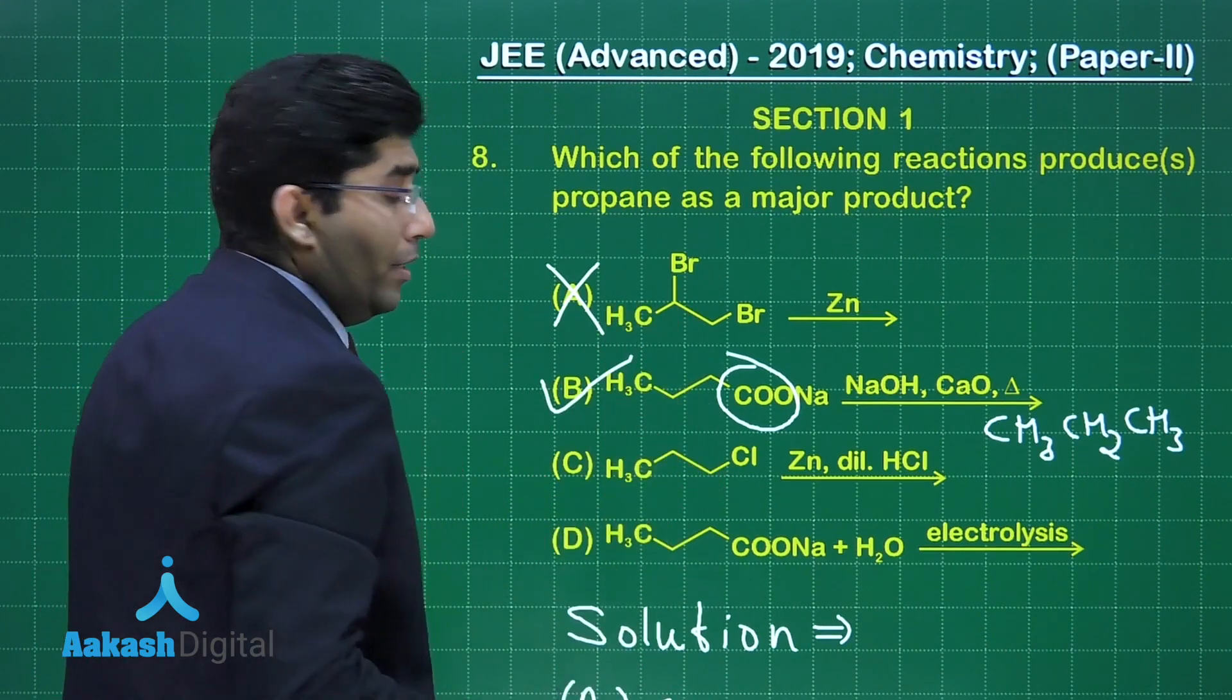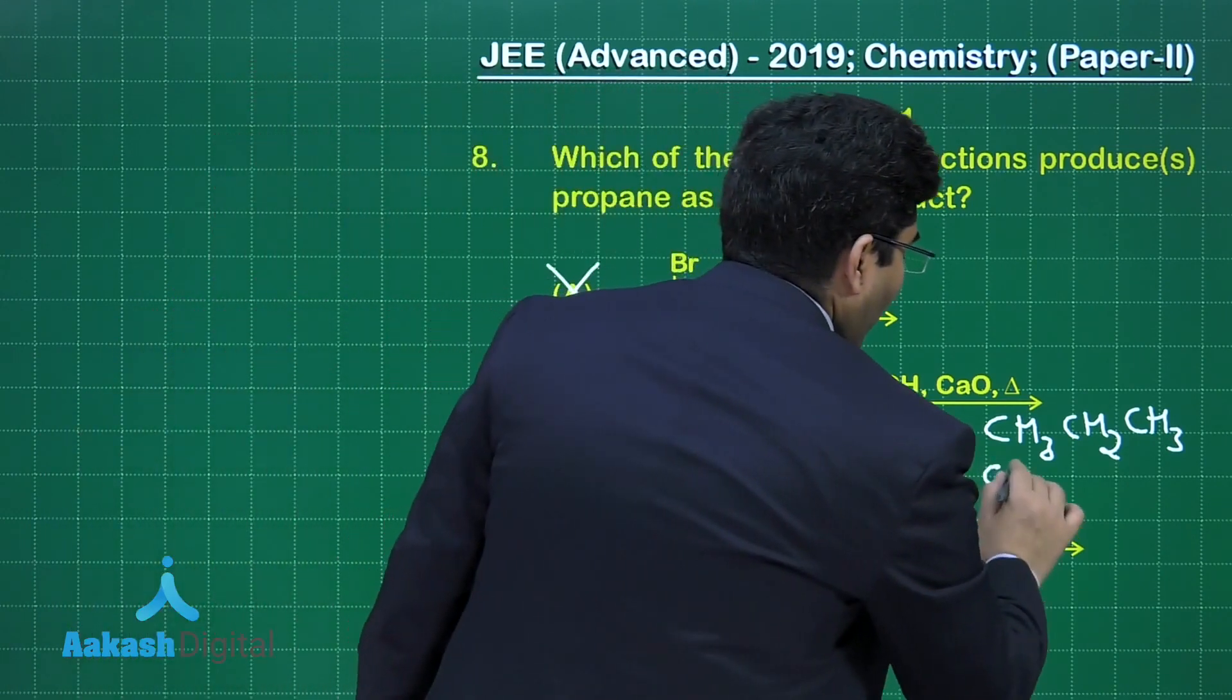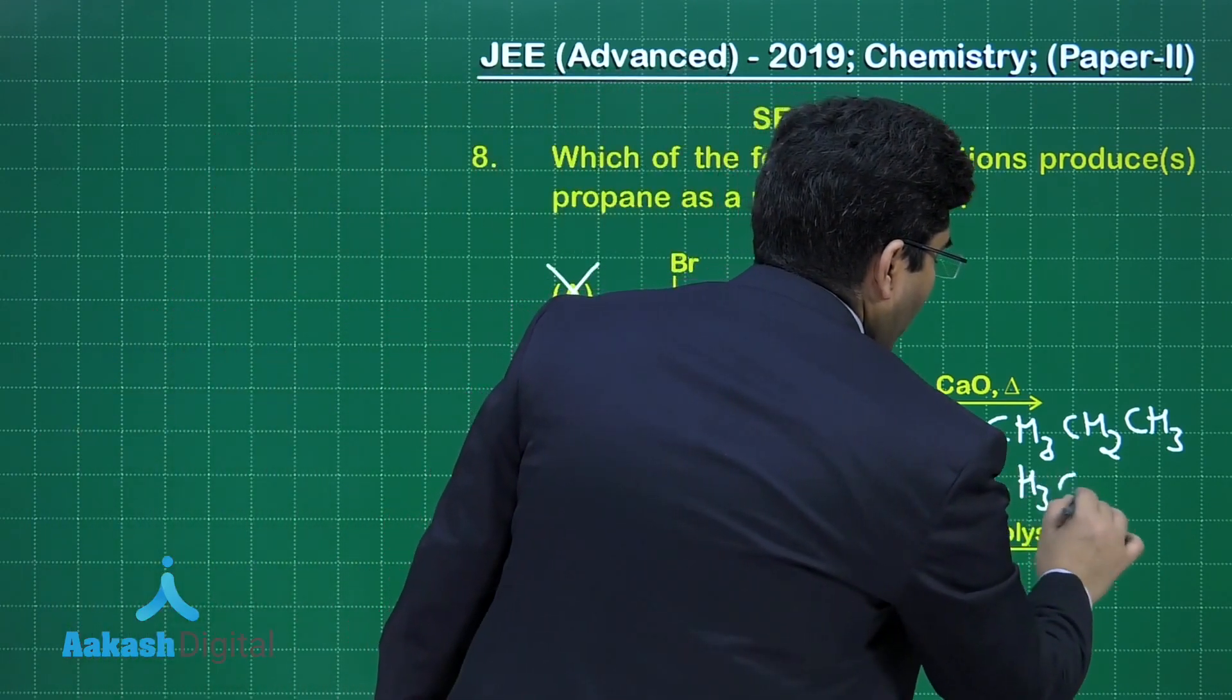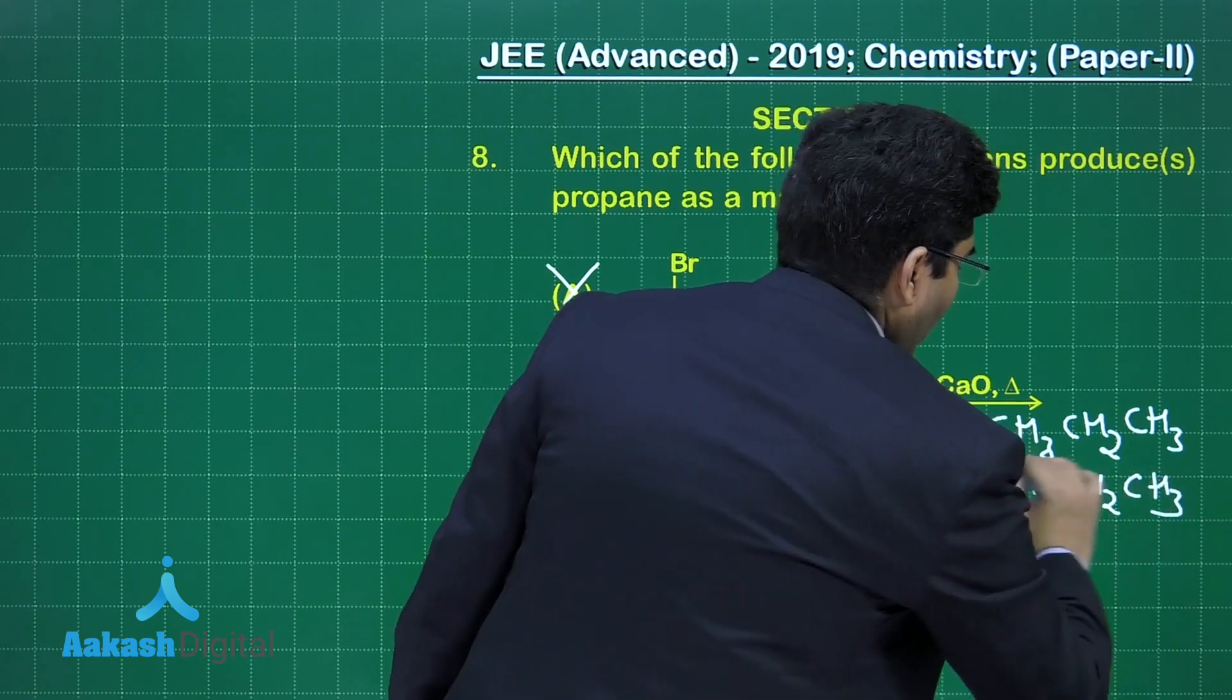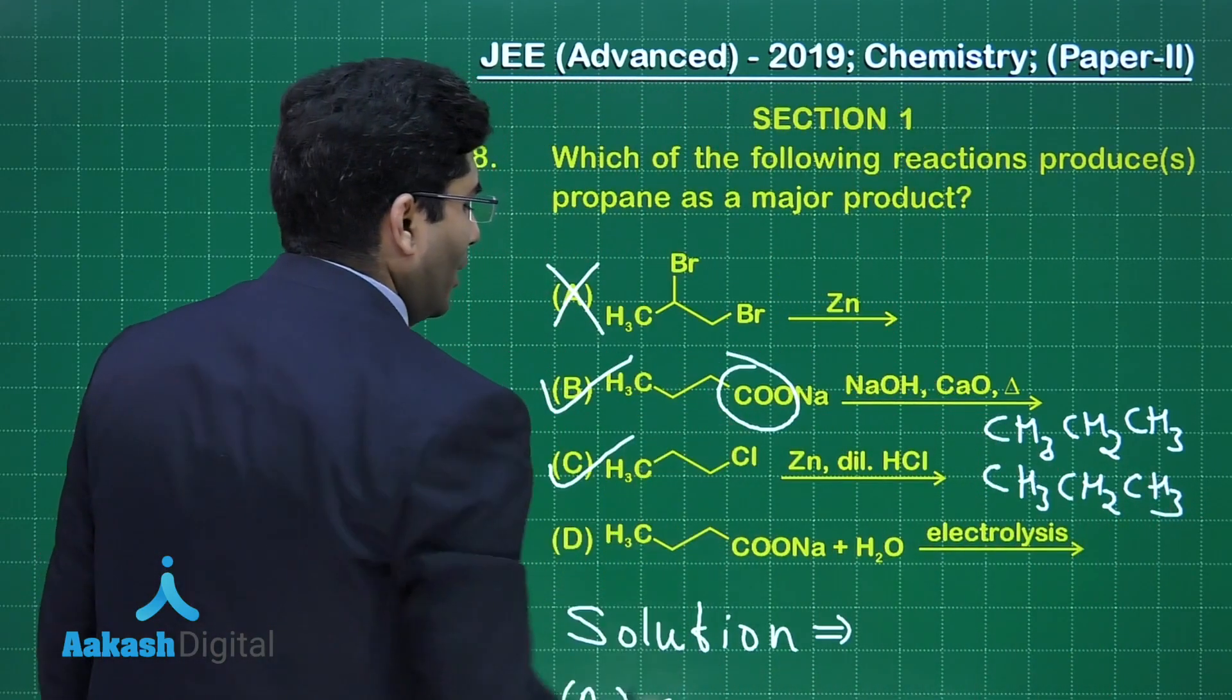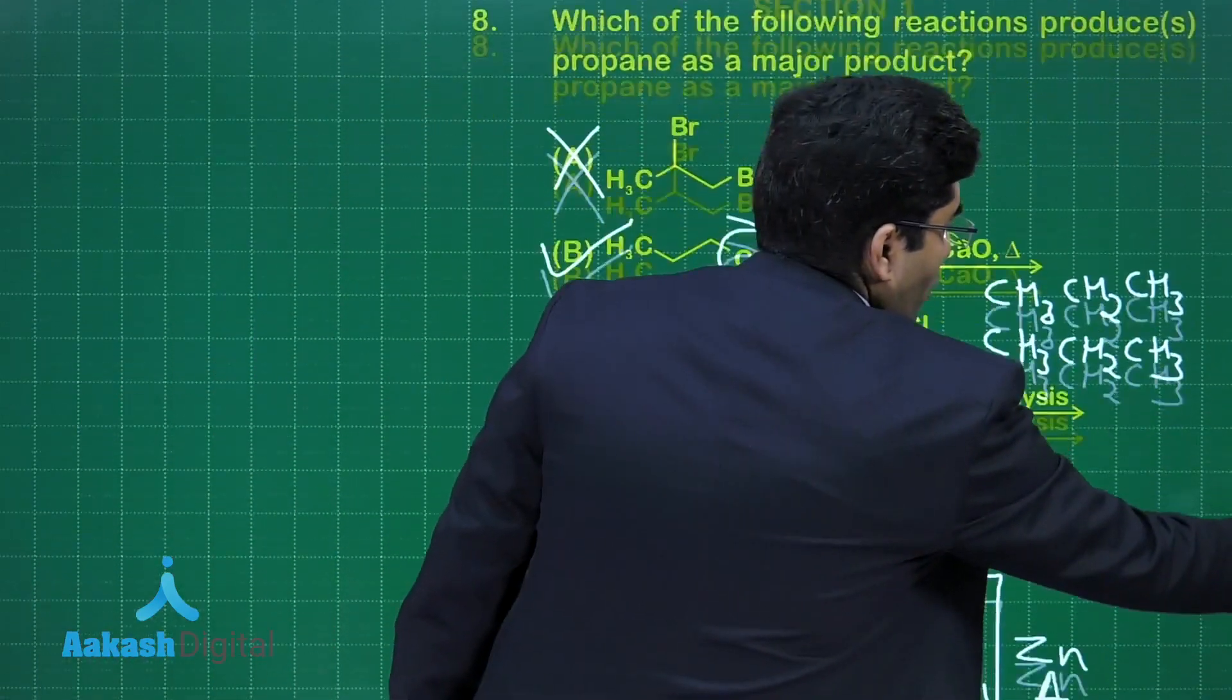So the option third, that is C, that is also correct. This will also give us CH₃-CH₂-CH₃. So this is also the correct answer.